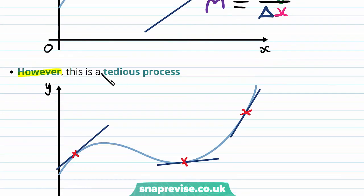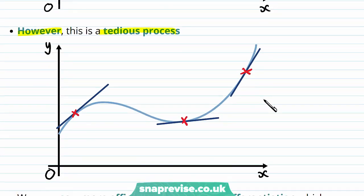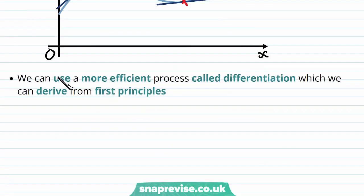However, this is a tedious process. Even if you wanted to do this for a lot of different points, we still wouldn't cover every single point on the curve, and this is quite a long process for each point anyway. So we need a more general method. We can use a more efficient process called differentiation, which you can derive from first principles.